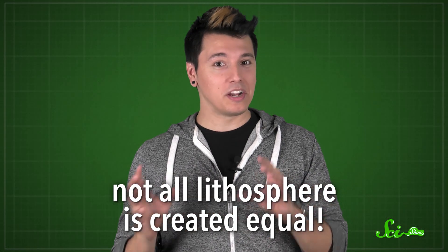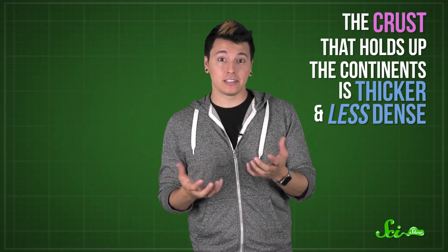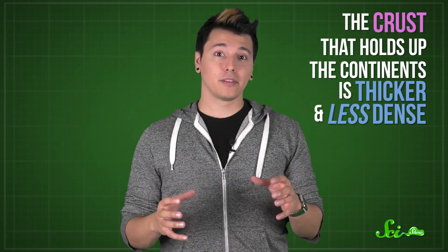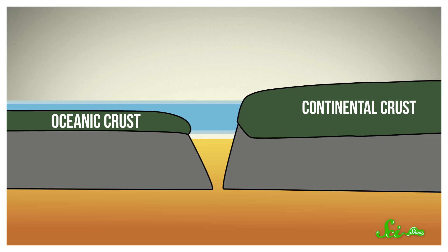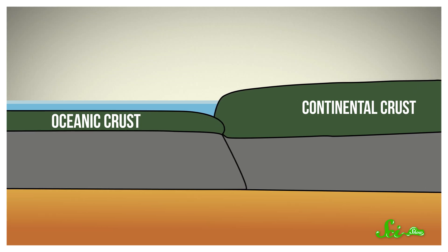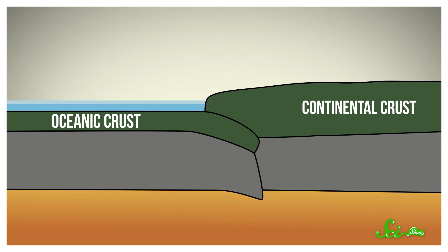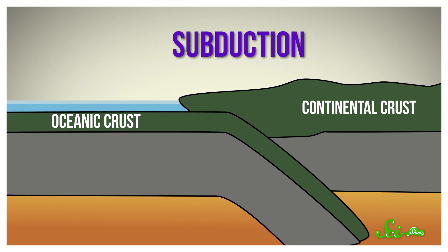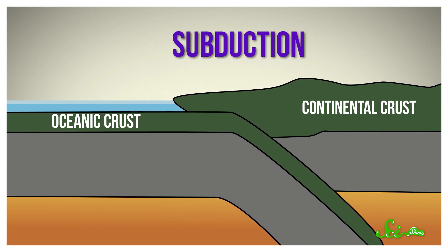But not all lithosphere is created equal. The crust that holds up the continents is thicker and less dense than the crust beneath the oceans. The continental crust floats really well — if you can imagine a slab of rock thousands of kilometers across floating. That means when oceanic crust and continental crust meet up, the oceanic crust tends to get shoved underneath and melted in a process called subduction. The continental crust rides on top and survives to collide another day.